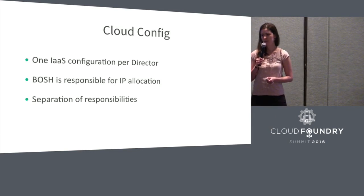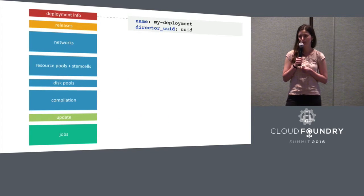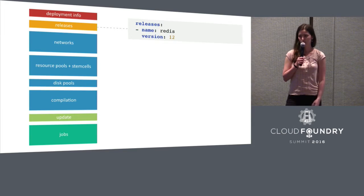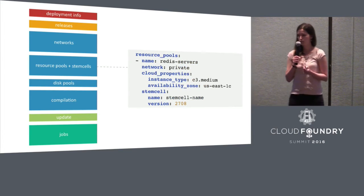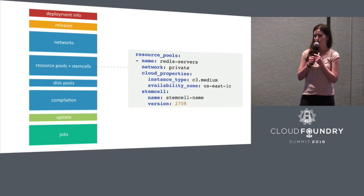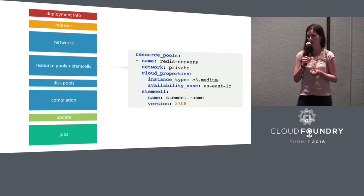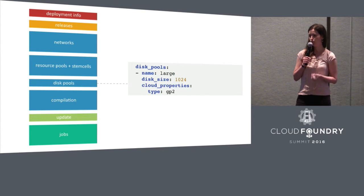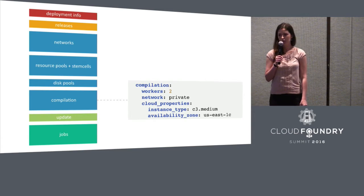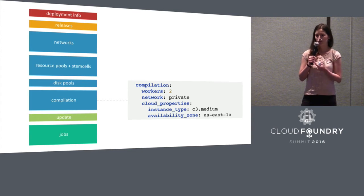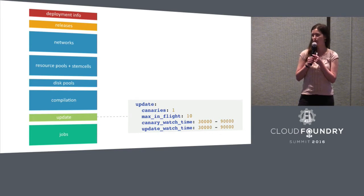Let's take a look at what constitutes cloud config. This is how the deployment manifest used to look. It contains some deployment information, a list of releases the deployment will use, some networks with cloud-specific properties, and resource pools — basically types of VMs the deployment can use — with cloud-specific properties referencing a stem cell. Also, the disk pool section listed types of disks you can provision in your cloud provider, and the compilation section defined how Bosch should compile packages and what type of VM to use for compilation — usually the most CPU-efficient VM type.